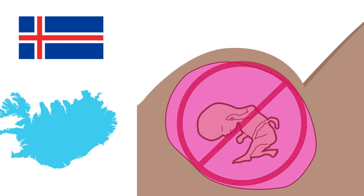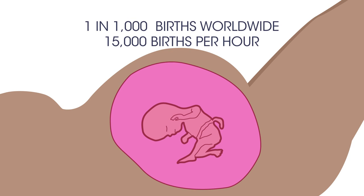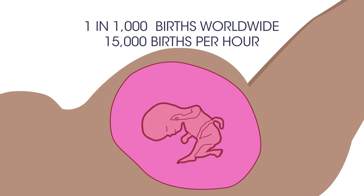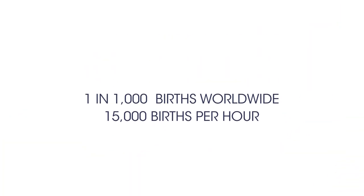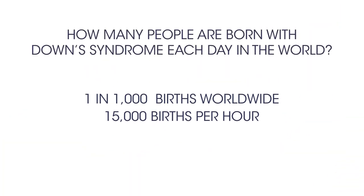What do you think about this? The estimated incidence of Down's syndrome is about 1 in 1,000 births worldwide. There are about 15,000 births per hour in the world — so how many people are born with Down's syndrome each day in the world?